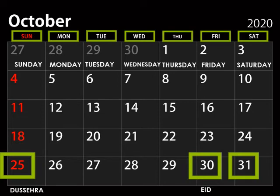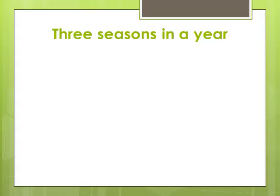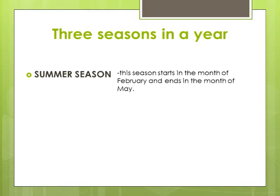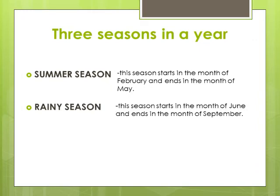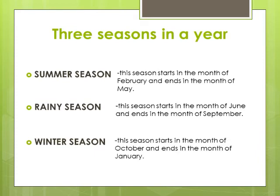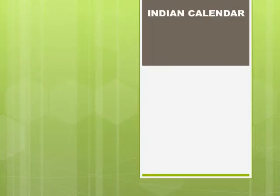There are three seasons in a year. Summer season — this season starts in the month of February and ends in the month of May. Rainy season — this season starts in the month of June and ends in the month of September. Winter season — this season starts in the month of October and ends in the month of January.